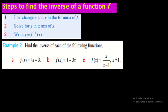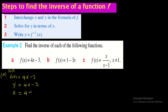Here are three functions. Find the inverse. For part (a): f(x) = 4x - 3. Since f(x) means y, we have y = 4x - 3. According to the first step, in place of y write x, and in place of x write y: x = 4y - 3.